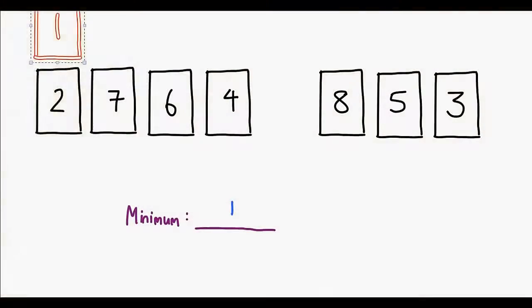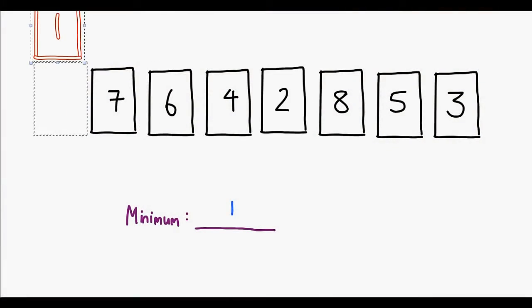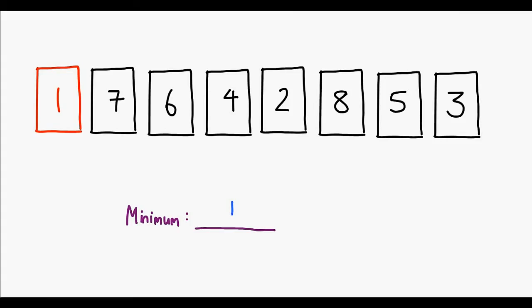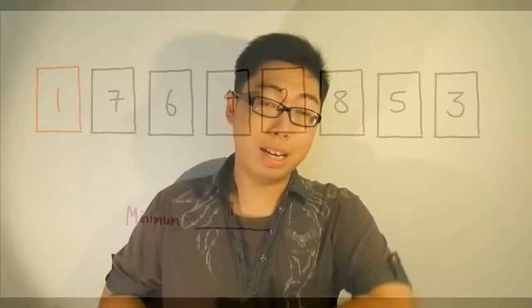Once we've found the minimum element, what we're going to do is actually swap it with the element in the first position. Since that is exactly how we want the list to be sorted — smallest on the left and largest on the right — the smallest element, which has now been put into the leftmost position, can be considered sorted. I'm going to go ahead and mark that card blue for clarity.